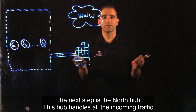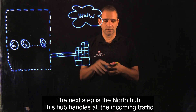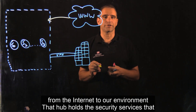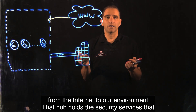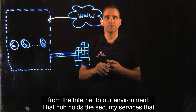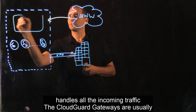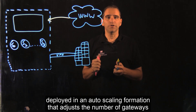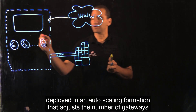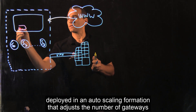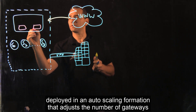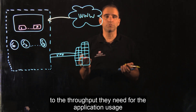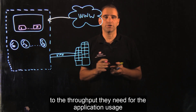The next segment is the north hub. This hub handles all the incoming traffic from the internet to our environment. It holds the security services that handle all the incoming traffic. The CloudGuard gateways are usually deployed in an auto-scaling formation that adjusts the number of gateways to the throughput they need based on application usage.